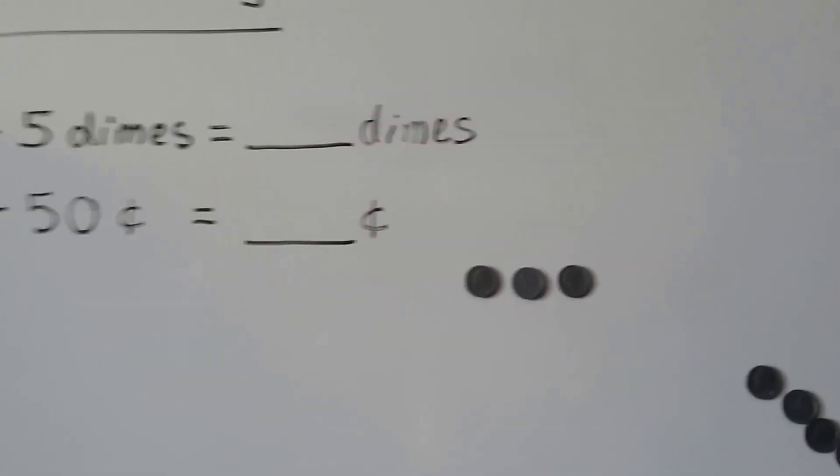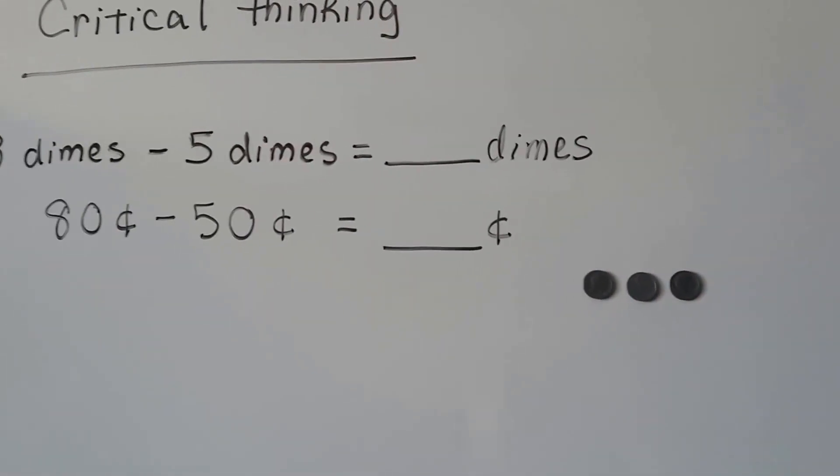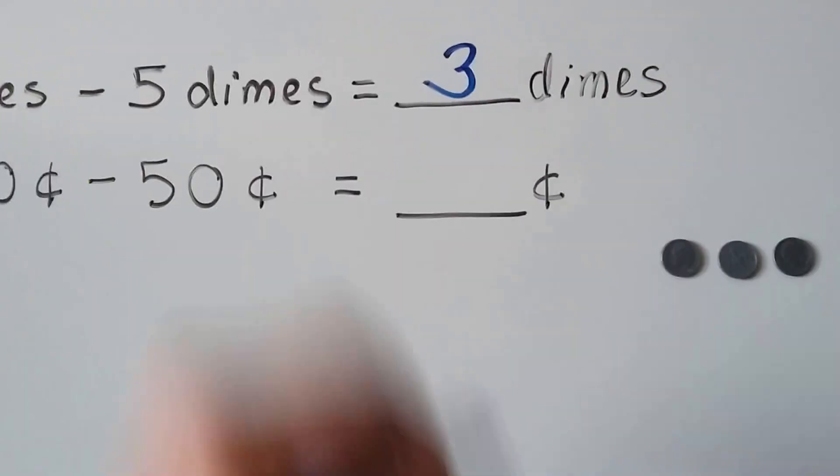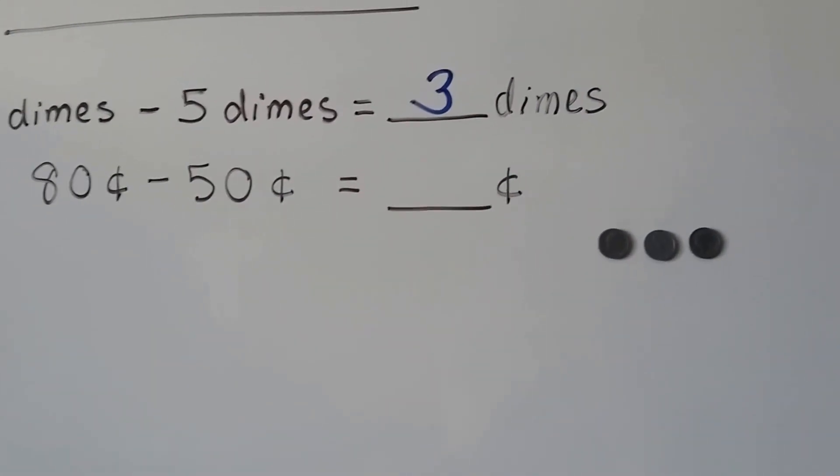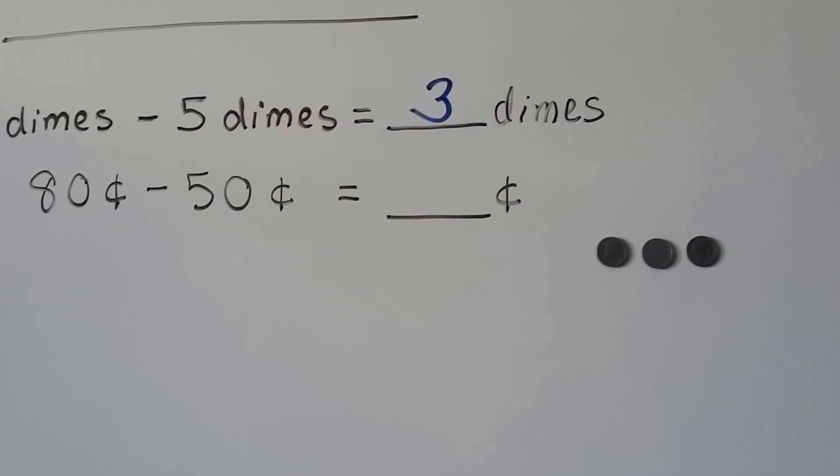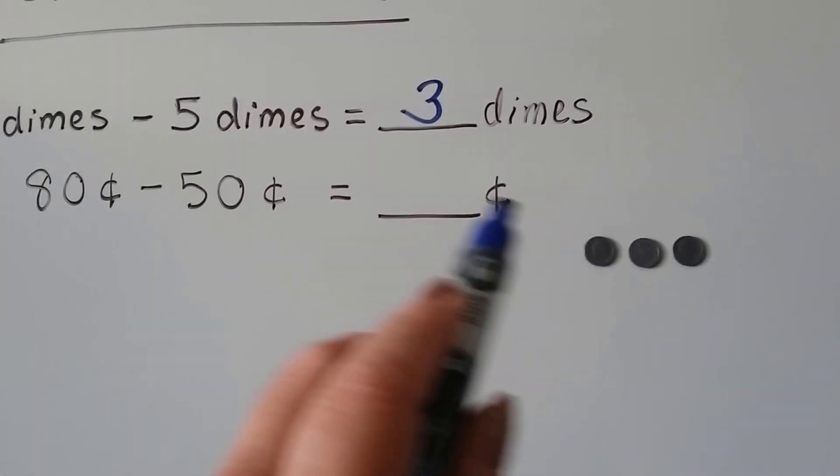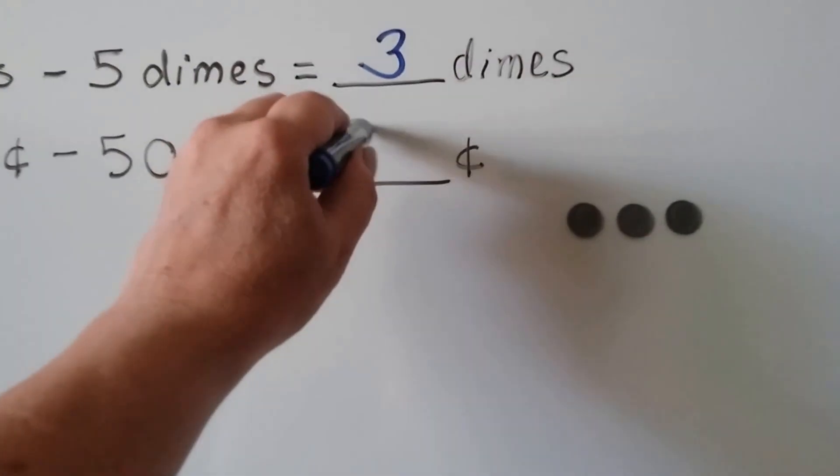All we have left are three dimes, eighty cents minus fifty cents. Three dimes is ten, twenty, thirty. That would be thirty cents.